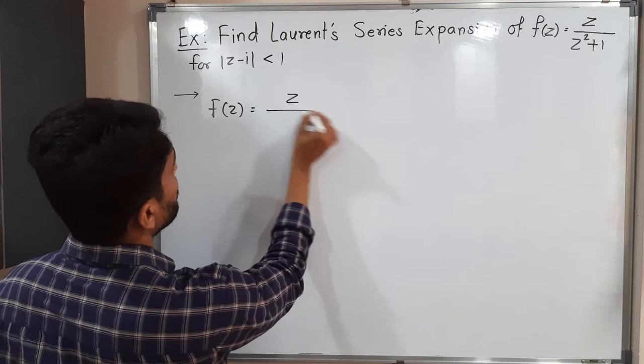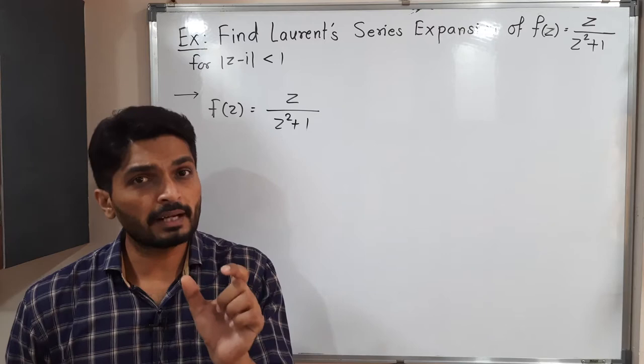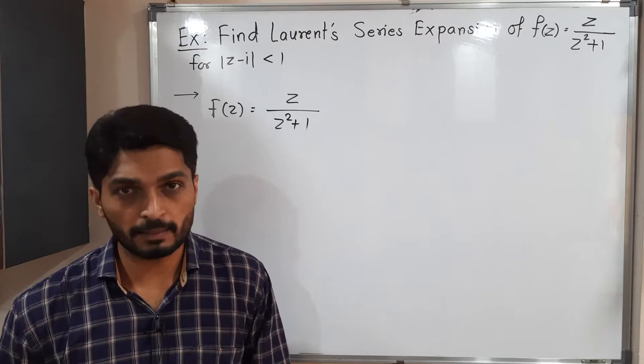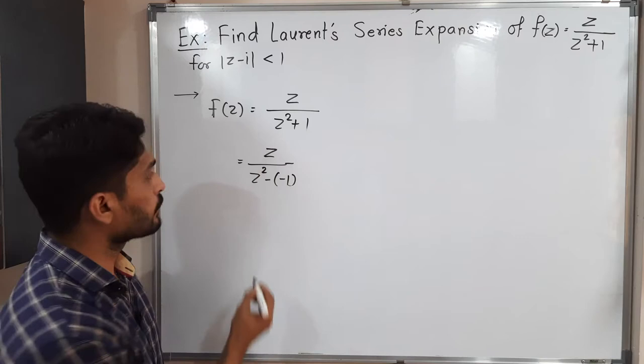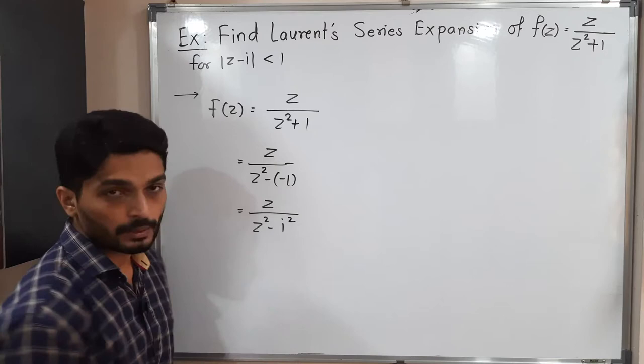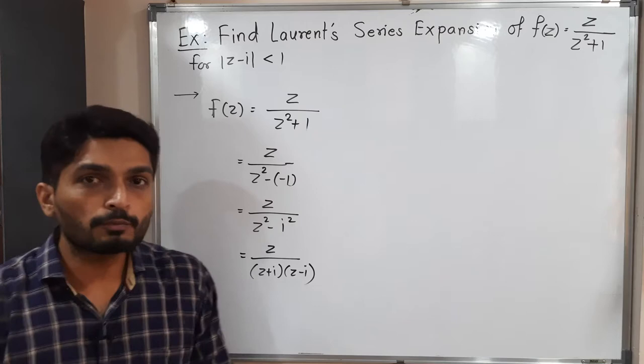Starting with the given function z/(z² + 1). Since z - i should appear everywhere in the series, I will try to adjust the (z - i) bracket. So this is equal to z/(z² - (-1)), and since -1 = i², we get z/(z² - i²). Using the formula a² - b² = (a+b)(a-b), this becomes z/((z + i)(z - i)). Now we have to make these two brackets separate as a/(z + i) + b/(z - i).